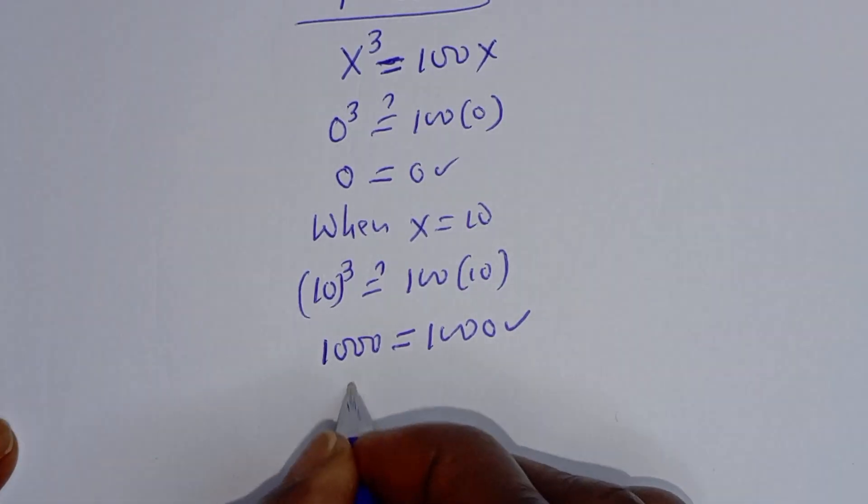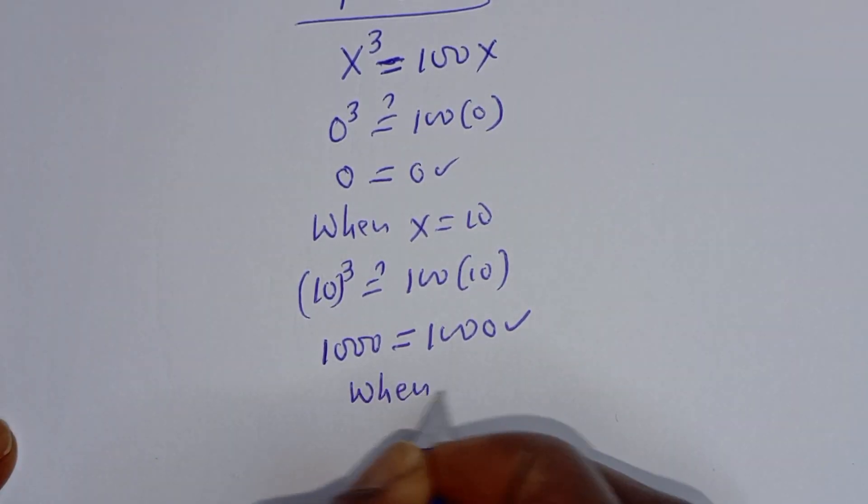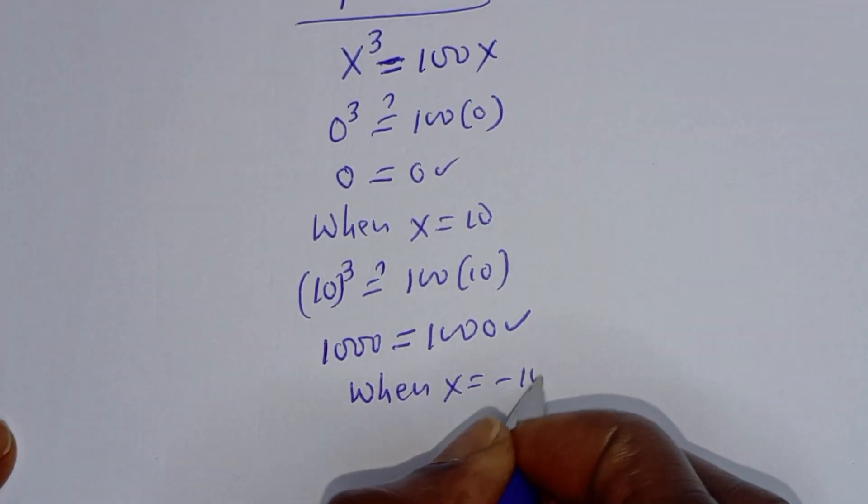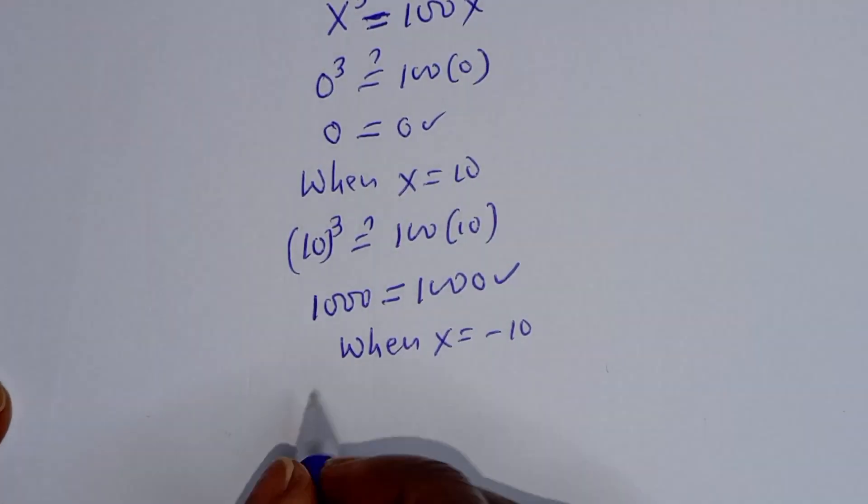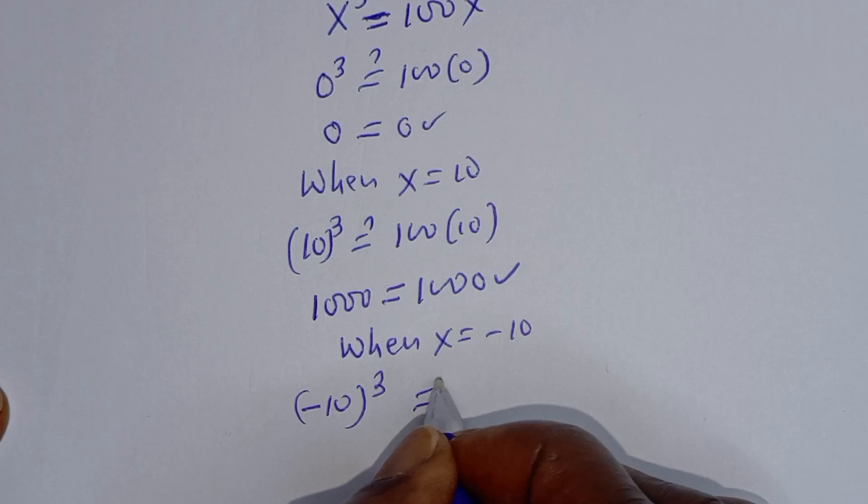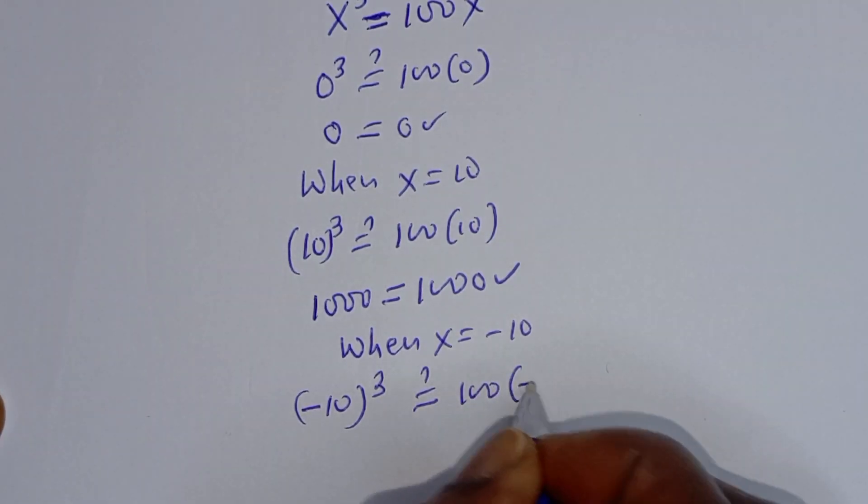Now let's check when x is equal to minus 10. This is minus 10 to the power of 3 must be equal to 100 multiplied by minus 10.